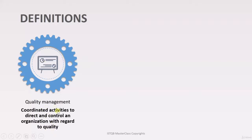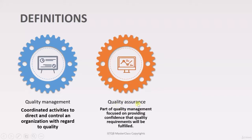Now let's see the second term, Quality Assurance. Quality Assurance is part of Quality Management — Quality Management is the bigger system. The purpose of Quality Assurance is to focus on providing confidence that quality requirements will be fulfilled.